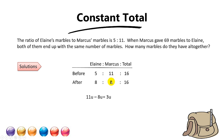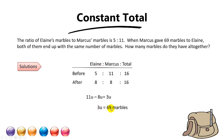The next step — you can either take 11 minus 8 or 8 minus 5. Marcus's marbles decreased by 3 units while Elaine's marbles increased by 3 units, which makes sense because Marcus is giving the marbles to Elaine. So 3 units equals 69, meaning 1 unit equals 69 divided by 3, which is 23.